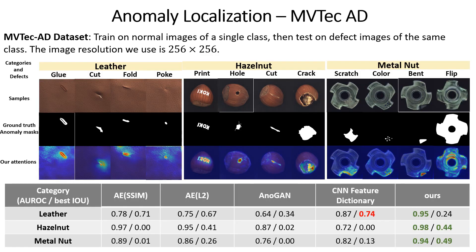The second example we show is on the MVTec AD dataset. For each category, we train the VAE with only flawless images. During inference time, we input images with different types of defects, and the high responses in our attention maps capture the region of defect. Quantitative scores are also computed using area under the ROC curve and the best IOU.